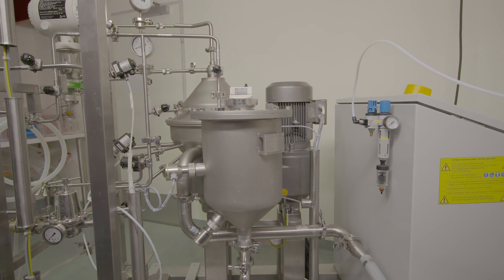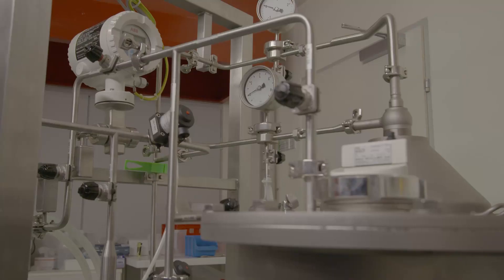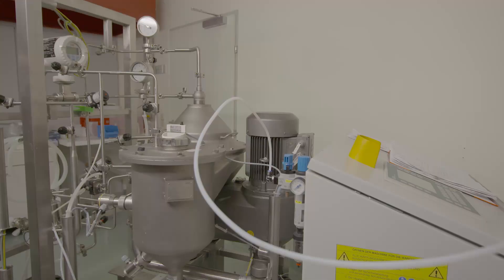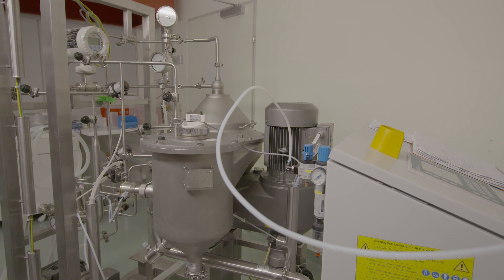Harvesting of fermentation broths can be carried out either by centrifugation or microfiltration. The pilot plant has an industrial state-of-the-art disc stack separator. Cells are separated from the supernatant by high centrifugal forces.